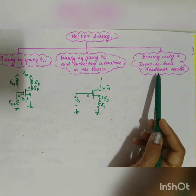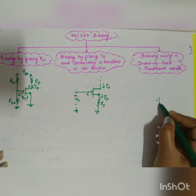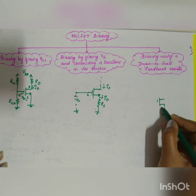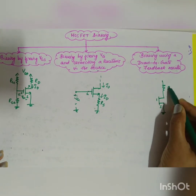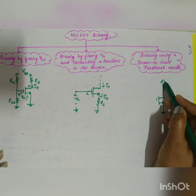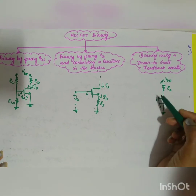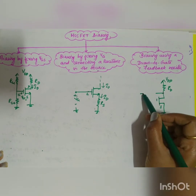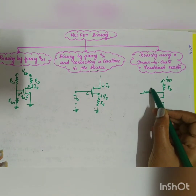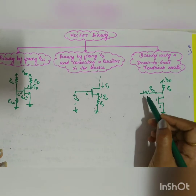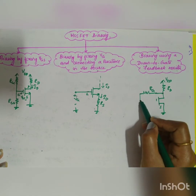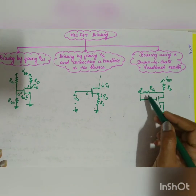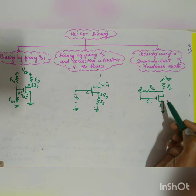The third circuit is biasing using a drain-to-gate feedback resistor. Here the source is grounded, a resistor RD is placed across the drain with VDD supplied. From the drain to the gate, a feedback resistor RG is connected. RG has a very high value and high impedance so that the current through the gate is equal to zero.